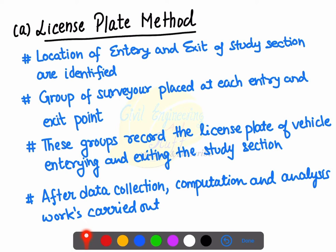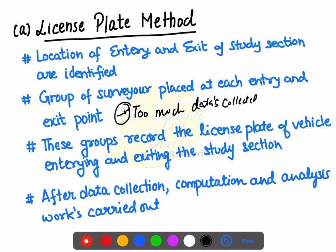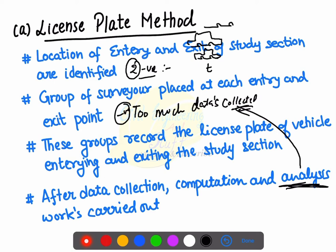The negative points of the license plate method are: first, too much data is collected and analysing this data takes time. Second, a large number of vehicles cross the origin and destination points simultaneously, and because of this, some license plate numbers can get missed due to human error, as recording license plates of constantly moving vehicles becomes a very tedious task.